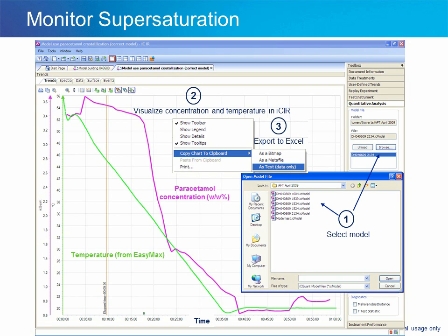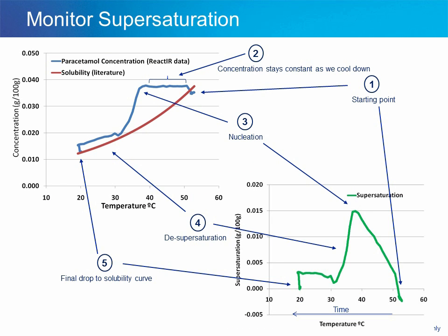At step 3, we can see that the data can be copied to the clipboard and then exported to Excel or any other software. Once we have the data in Excel, we can calculate the degree of supersaturation quantitatively because we have the solubility curve. Note that while we used a solubility curve from literature, solubility and metastable zone width can also be determined automatically using EasyMax and React-IR or FBRM. Step 1 indicates the start of cooling. Step 2 shows that while cooling is taking place, the concentration of paracetamol remains constant, but the green curve on the lower right shows that supersaturation is increasing until the onset of nucleation. Both concentration and supersaturation then decrease until desupersaturation is complete. Cooling continues and paracetamol continues to crystallize from solution until the endpoint is reached.